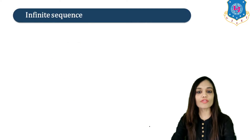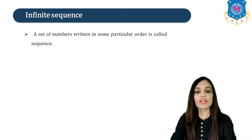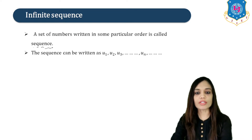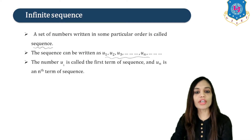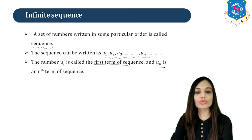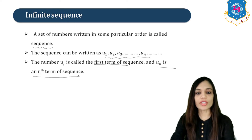Let us begin with its first topic, that is Infinite Sequence. A set of numbers written in some particular order is called a Sequence. The sequence can be written as U1, U2, U3, UN and so on. U1 is known as the first term of the sequence and UN is known as the Nth term of the sequence.